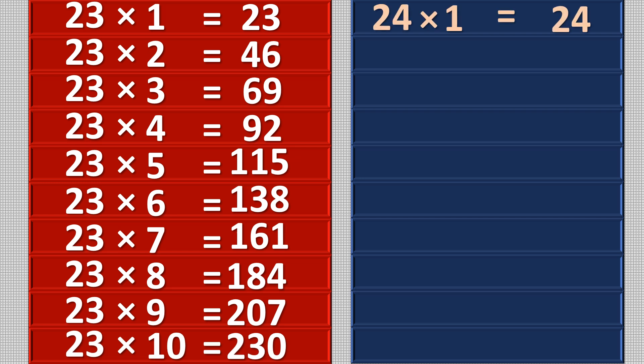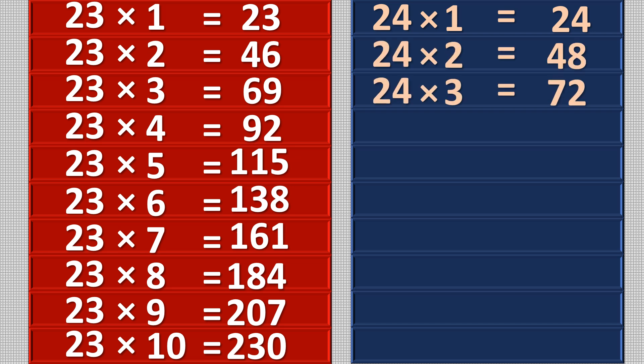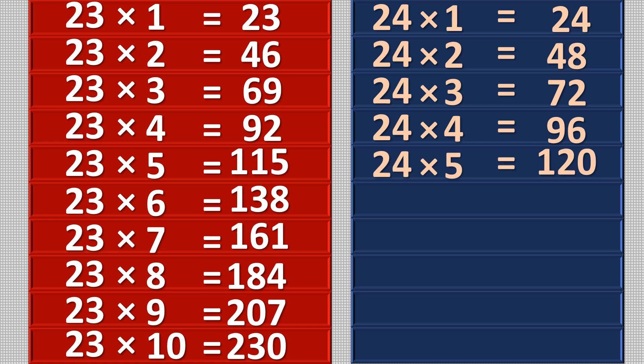24 1s are 24, 24 2s are 48, 24 3s are 72, 24 4s are 96, 24 5s are 120, 24 6s are 144.